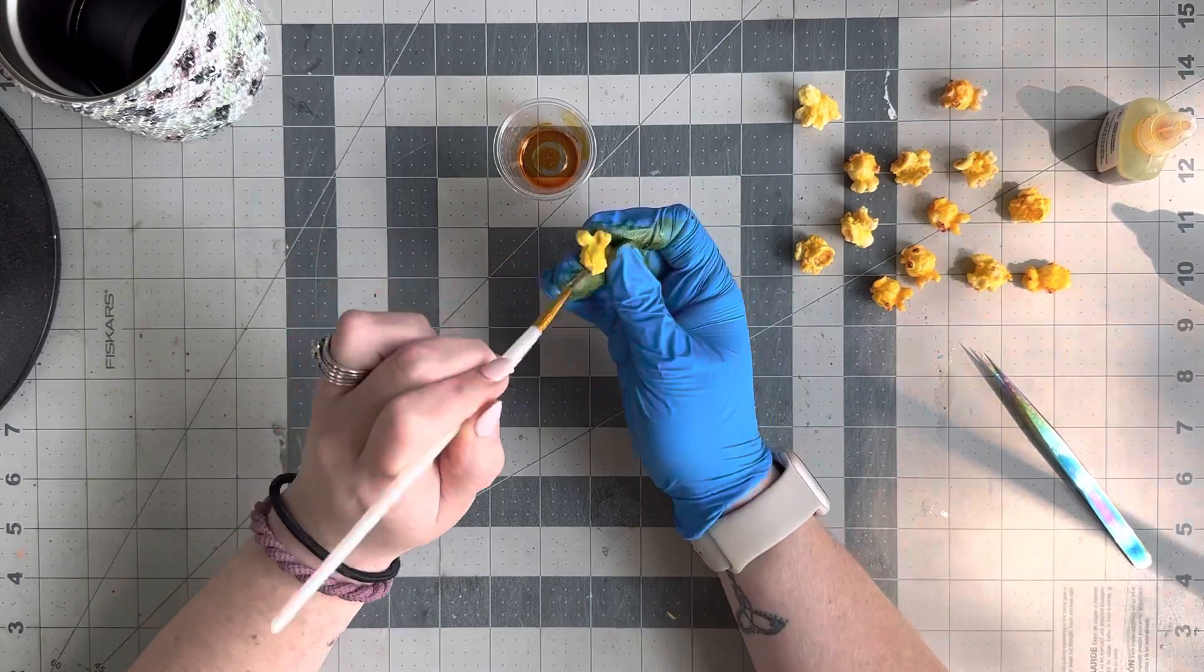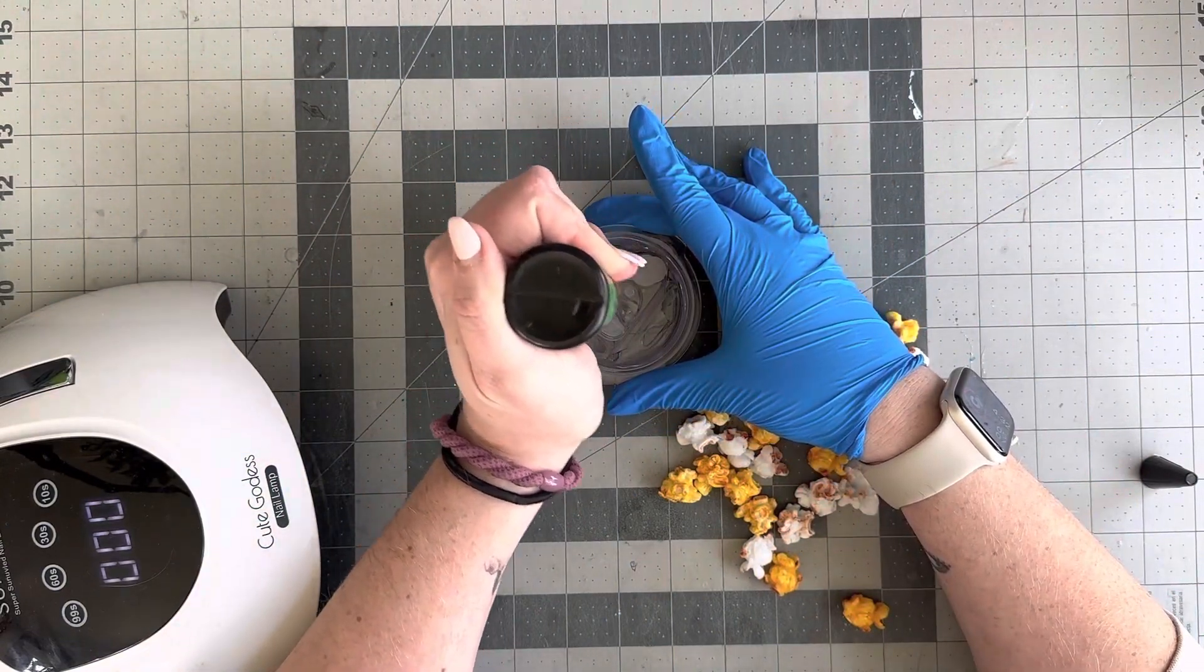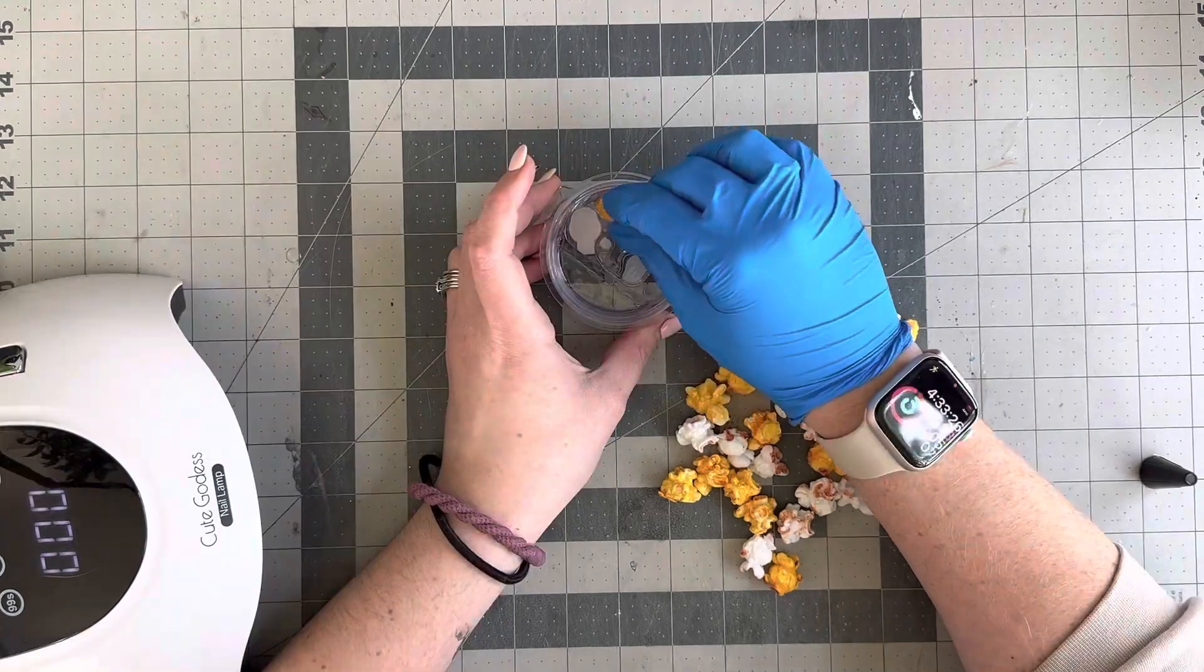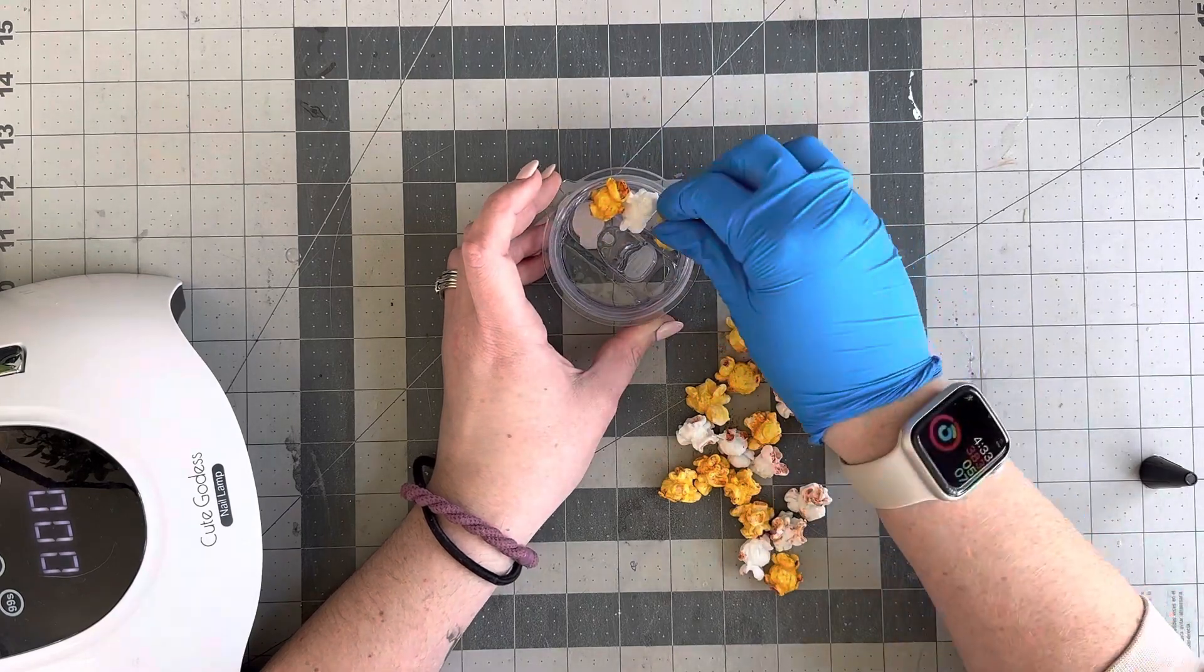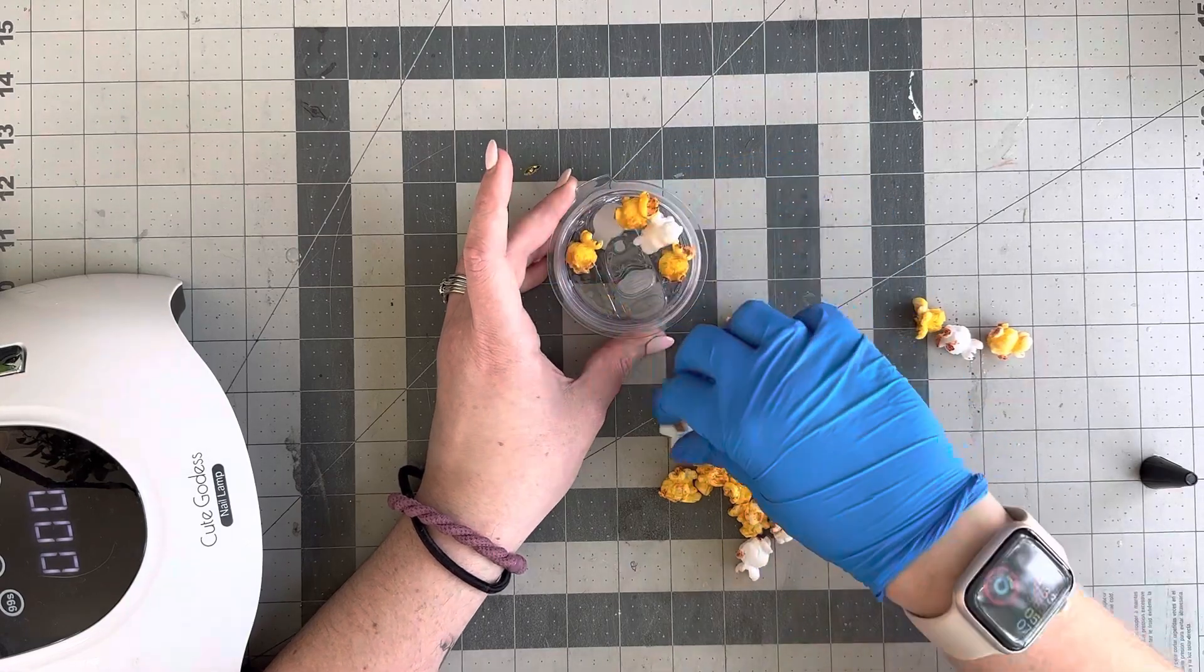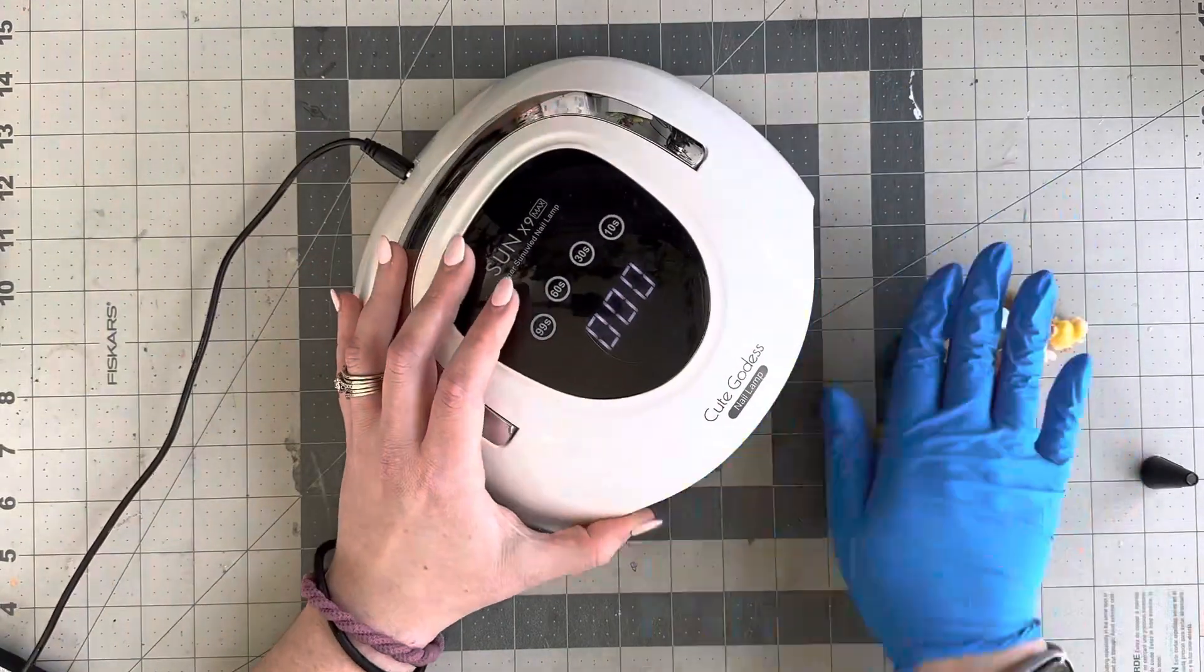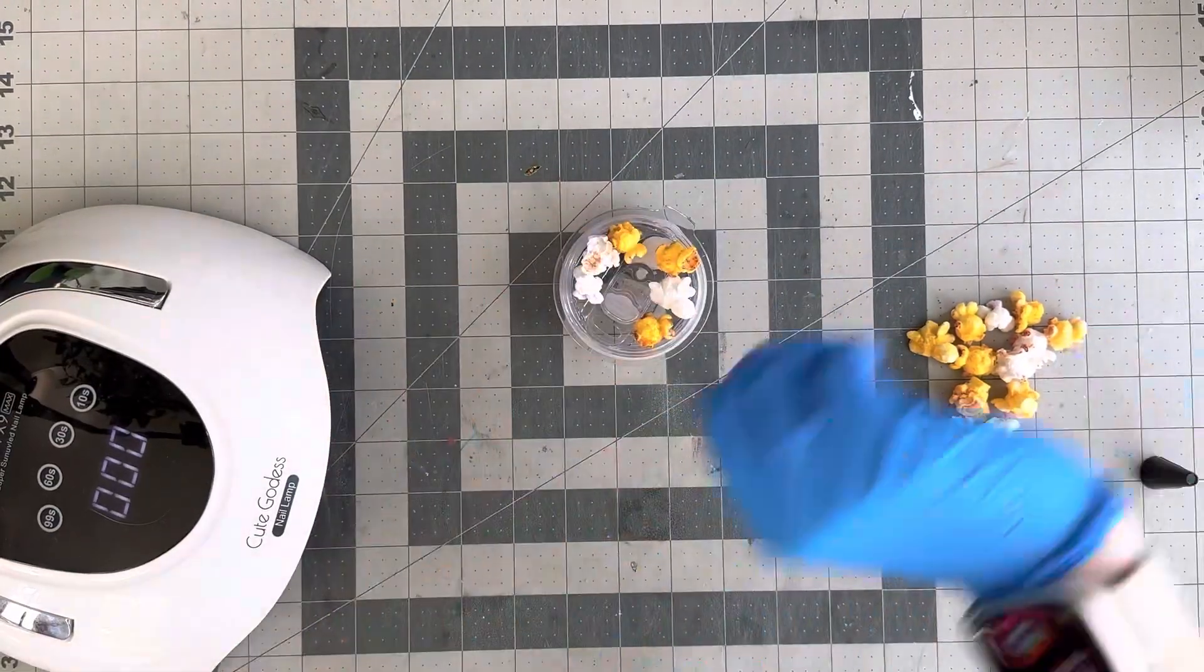Once that is all dry I'm gonna go in and start kind of placing how I want this to fit on the lid. Now keep in mind you are going to want to put your straw in there if you plan to use a straw so the popcorn kernels don't interfere with the straw. This lid is not big enough, the opening is not big enough for a straw so I wasn't too concerned about that. But I also didn't want any liquid getting into the popcorn causing mold or anything so just be conscious of that. You can also use this as a removable topper or if you want to send a customer like an alternate topper that doesn't have any popcorn on it that's an option as well.